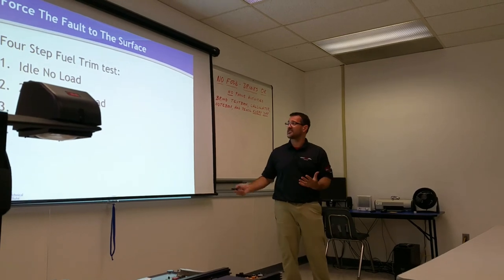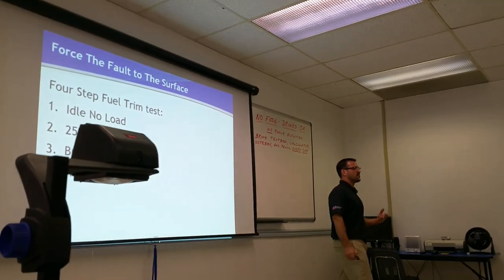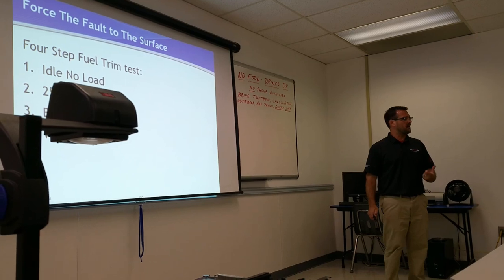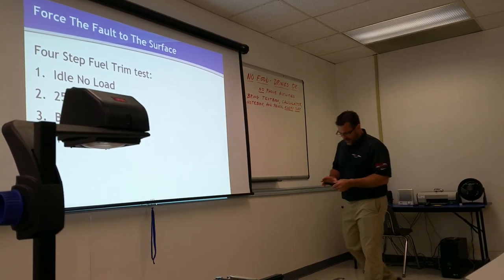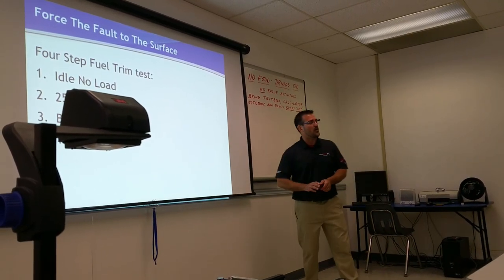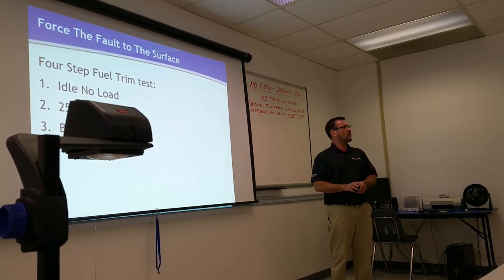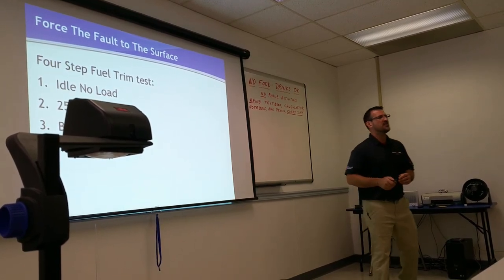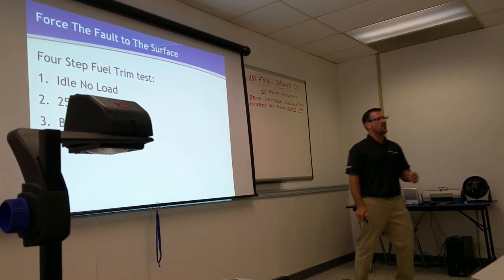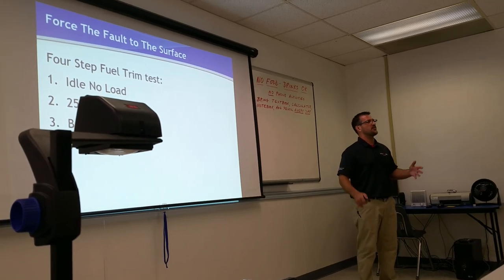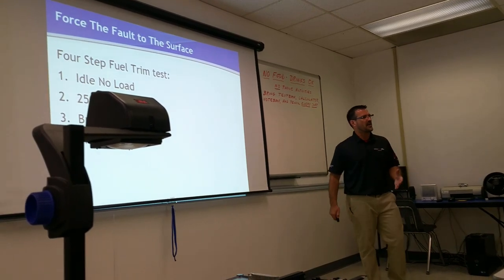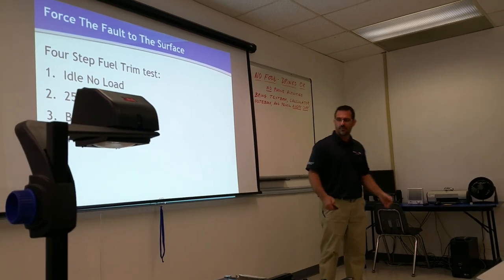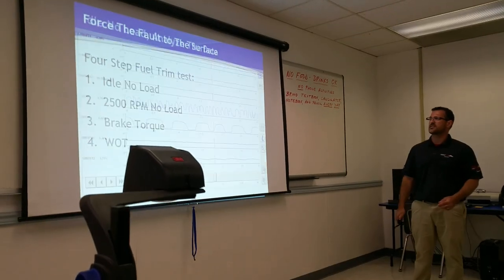We're going to apply our four-step process just like we did earlier: operating the vehicle at idle, operating the vehicle at elevated RPM with no load, operating under brake torque which is low RPM and high load, and then wide open throttle if need be, which is very high RPM and very high load. That puts the engine under all the operating conditions basically available for it to run. And we're going to look back at our fuel trim to infer when our fault is or is not present — we're going to use that as a diagnostic step.